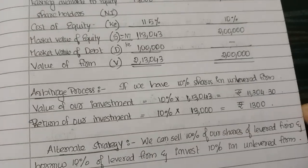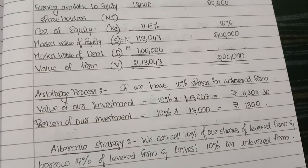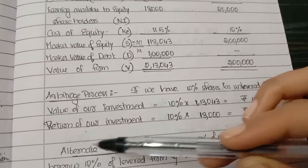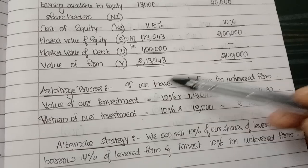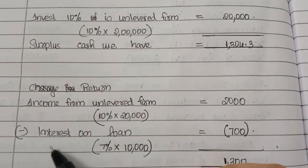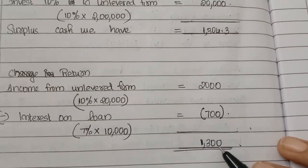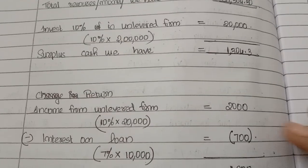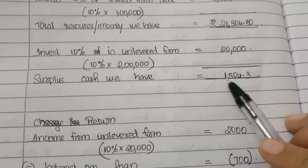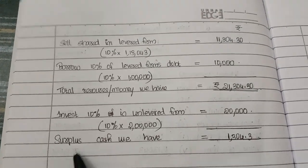In both cases — holding shares in the levered firm and holding shares in the unlevered firm — the return remains the same at 1,300 rupees. But the advantage of the alternate strategy is that we have a surplus of 1,304.30 rupees in hand. That is how the process of arbitrage works.